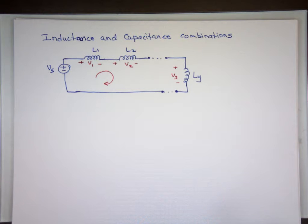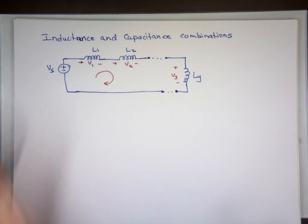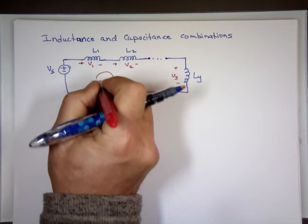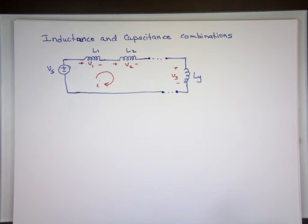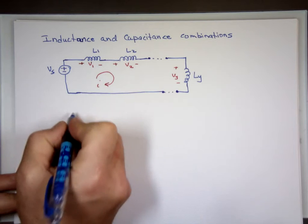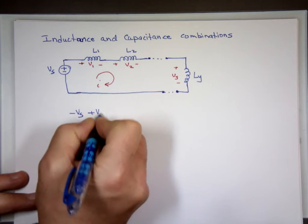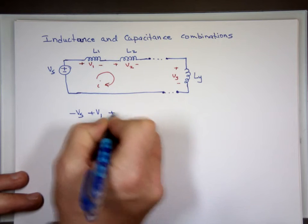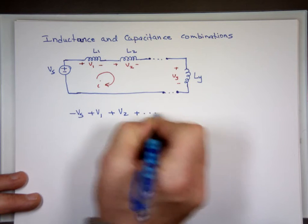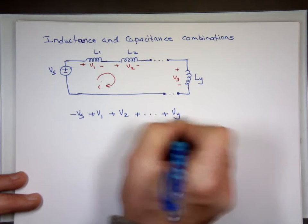If we do KVL, let's call this current I. The sum of the voltage in a closed loop is zero. So we'll begin minus to plus — that's a minus VS, plus V1, plus V2, plus dot dot dot, plus VY equals zero.